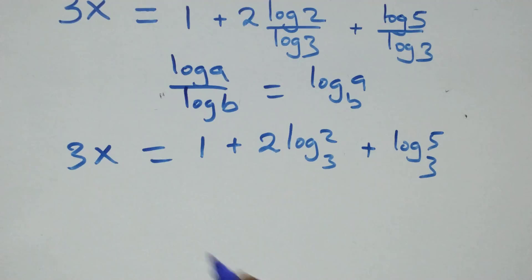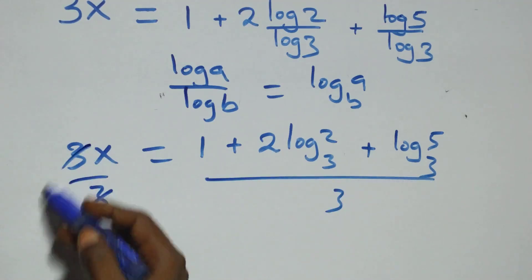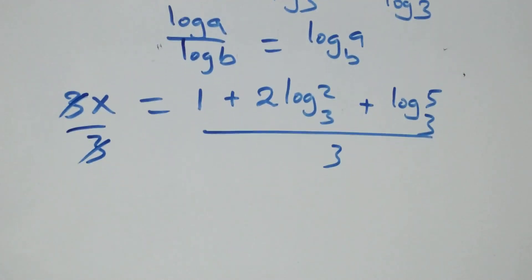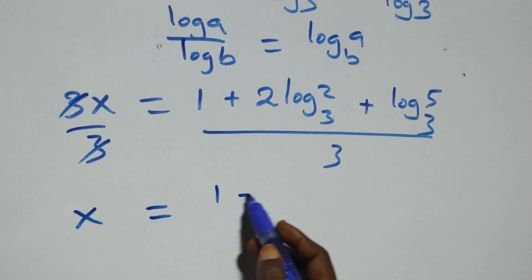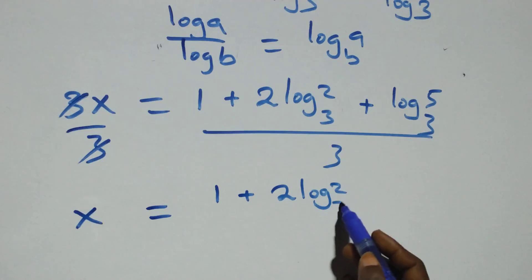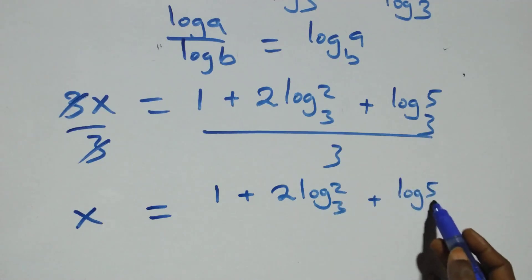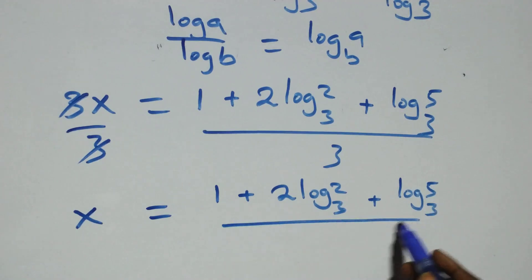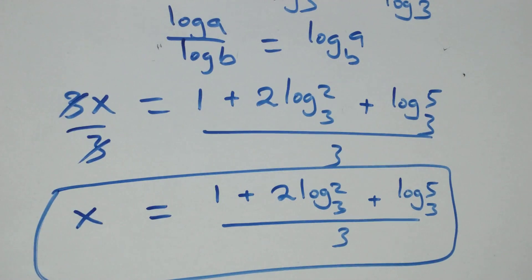Then here we divide both sides by 3: divide this side by 3, also divide this side by 3. The 3s cancel each other and we have x equals to (1 plus 2·log₃2 plus log₃5) all over 3. That is the value of x: one plus two log 2 base 3 plus log 5 base 3, all over 3.